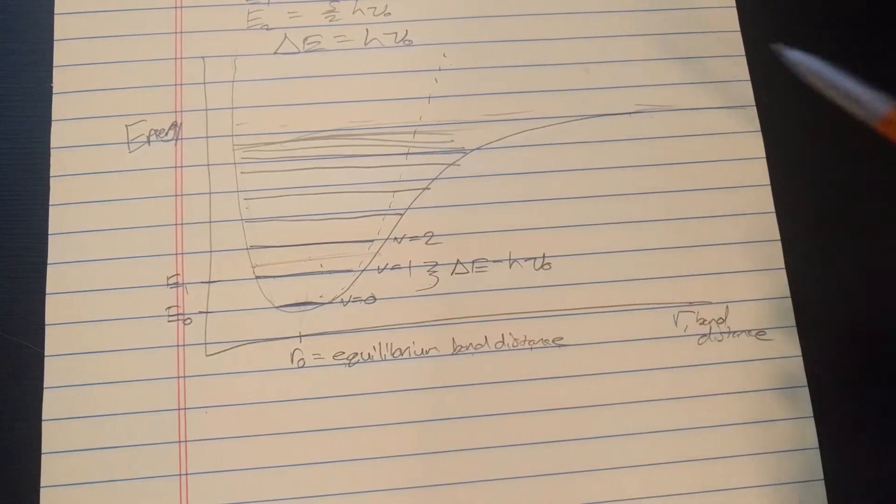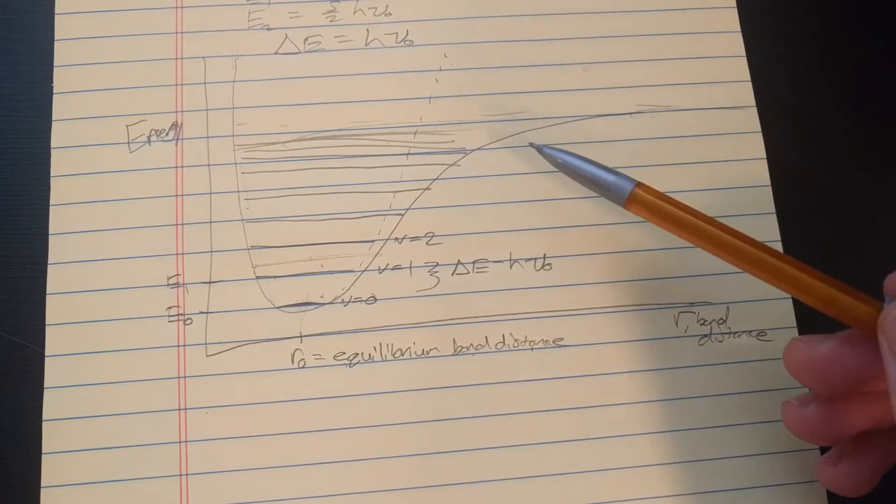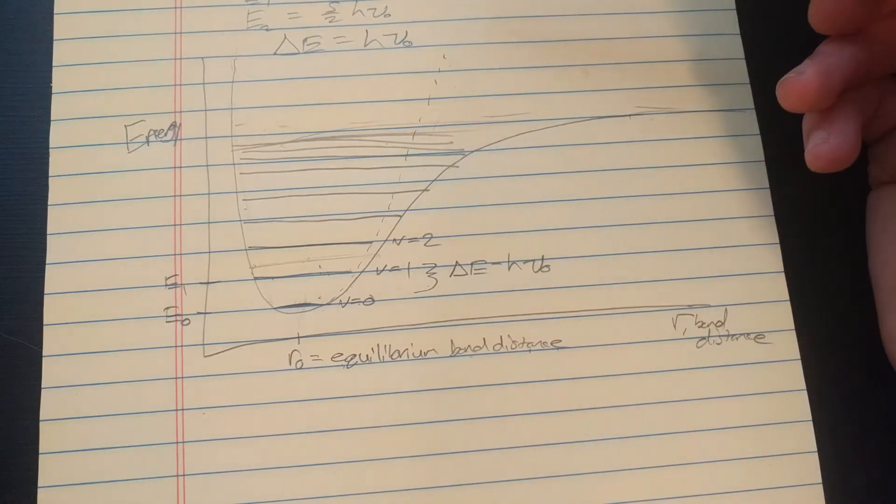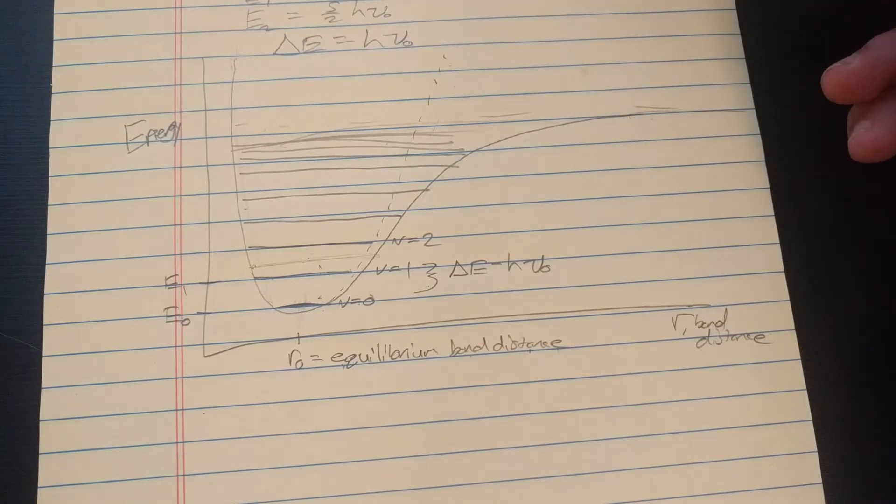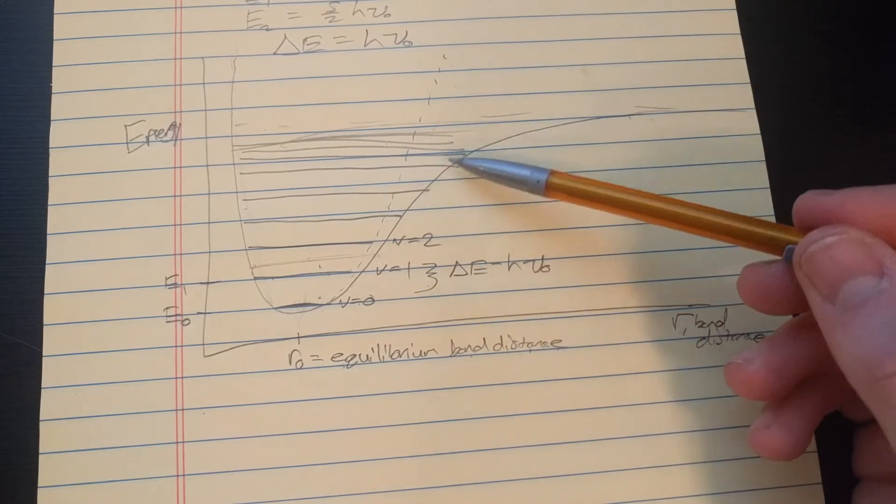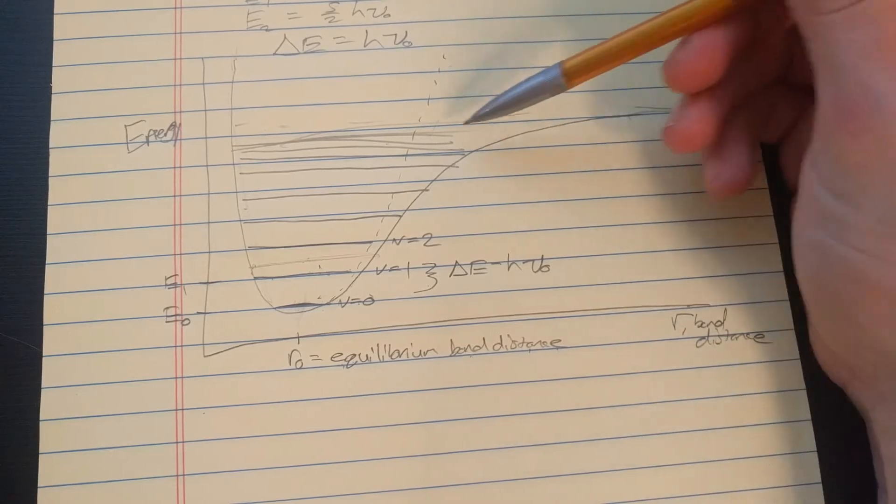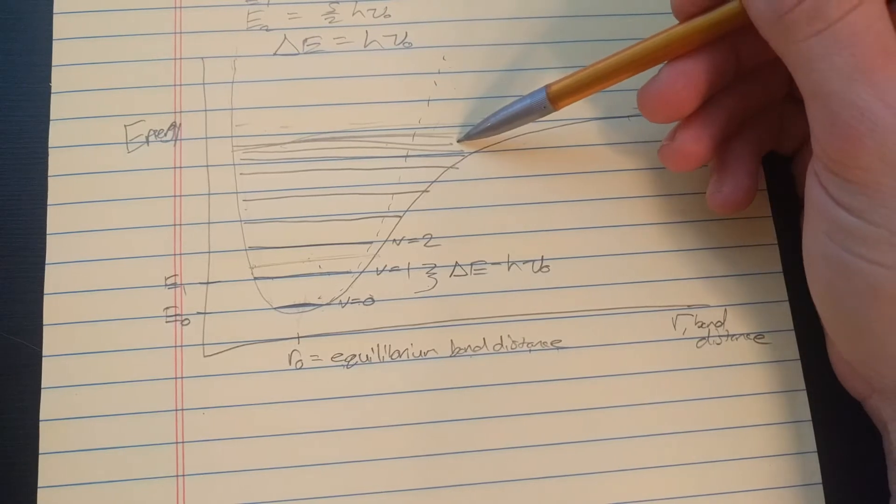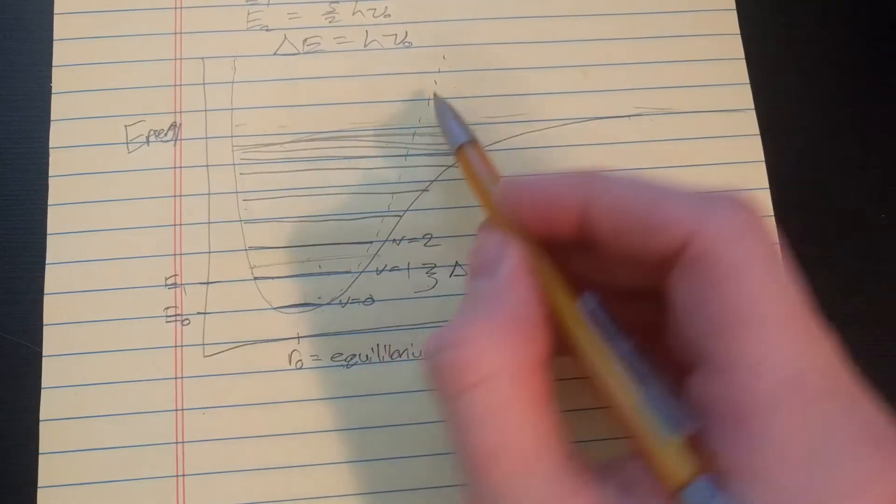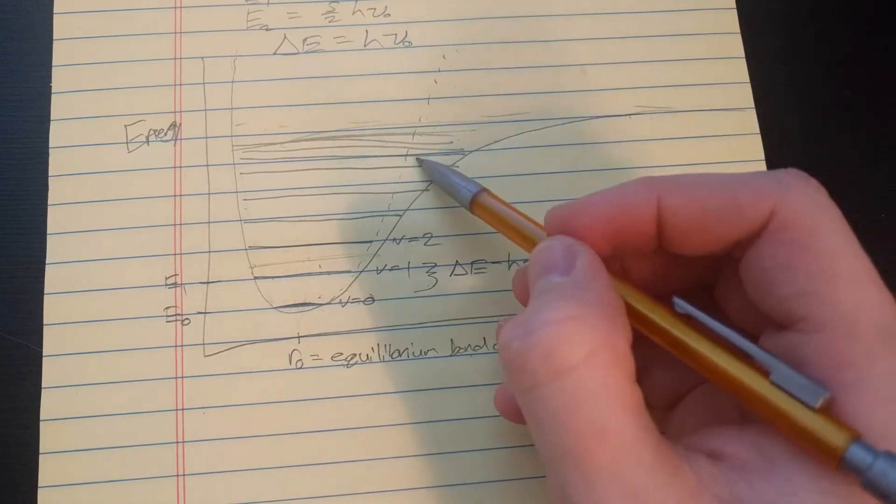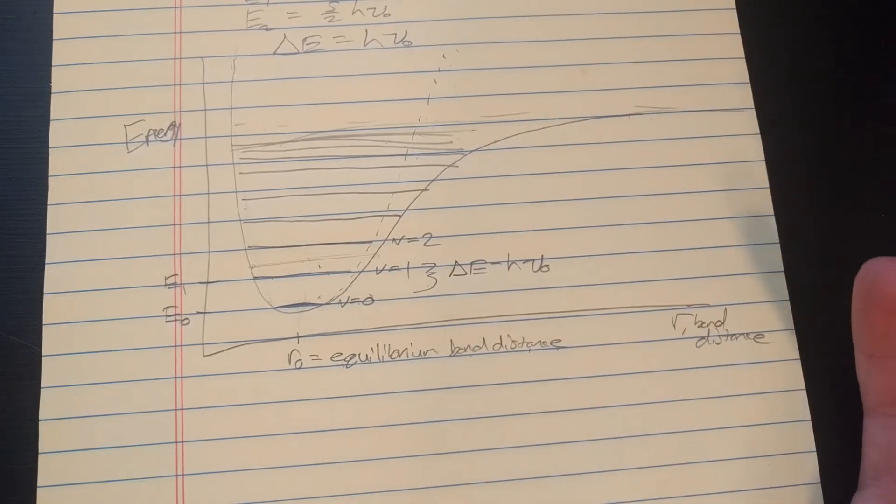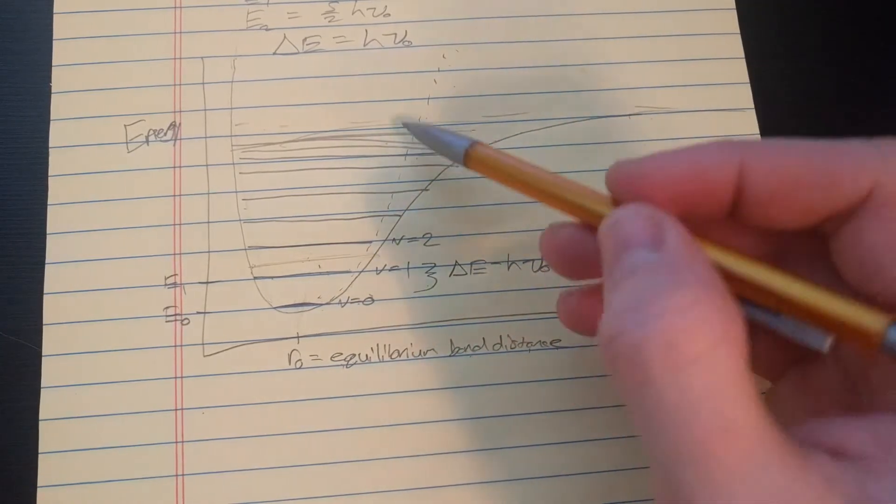A couple other things to notice with this graph. On the right side here, notice you have long bonds and on the left you have short bonds. And, as you get more and more closely spaced, as you go up here, this is called anharmonicity, which basically means it's not harmonic anymore. You can see it deviates further and further from an exact harmonic oscillator. So, at low levels, the harmonic oscillator is a pretty good approximation. At high levels, it's bad.